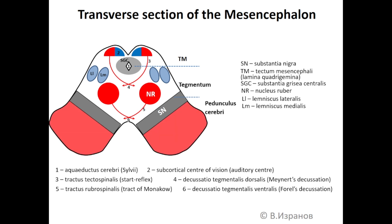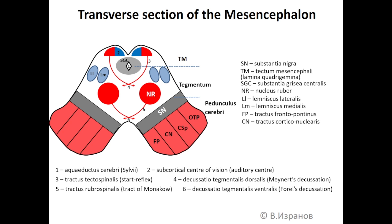In pedunculus cerebri there are several motor tracts. FP, most medially located, is tractus frontopontinus. CN is tractus corticonuclearis, which is responsible for conscious movements of the head and neck. CSP is tractus corticospinalis, which is responsible for conscious movements of the trunk and extremities. And OTP is tractus occipitotemporopontinus, which is responsible for coordination of each conscious movement.